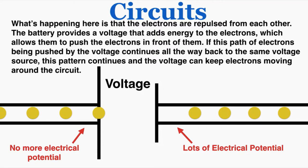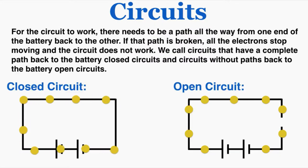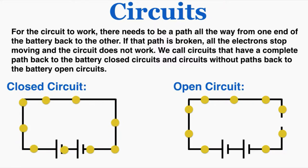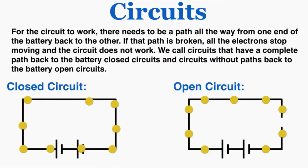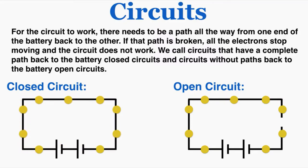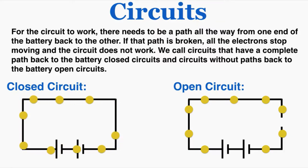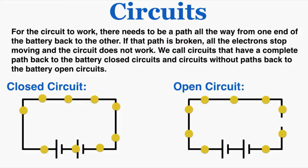The battery accelerates the electrons inside itself to push other electrons forward. For the circuit to work, there needs to be a path all the way from one end of the battery back to the other. If that path is broken, all the electrons stop moving and the circuit does not work. We call circuits that have a complete path back to the battery closed circuits, and circuits without a path back to the battery open circuits. The air between the wires provides a wall in an open circuit that electrons can't pass through — there's just too much resistance.